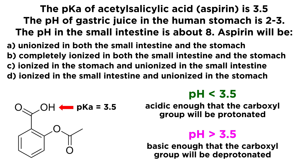We always compare pH with pKa in this manner to assess protonation states. The stomach is around pH 2 to 3, which is below the pKa of this carboxyl functional group. The small intestine has a pH of around 8, which is significantly higher than the pKa of 3.5. That means option D is correct: aspirin will be ionized in the small intestine, meaning the carboxyl group will deprotonate and we'll have the carboxylate anion, and it will be unionized in the stomach — the carboxyl group will be intact. That's a little bit of information regarding pH, pKa, and protonation states.